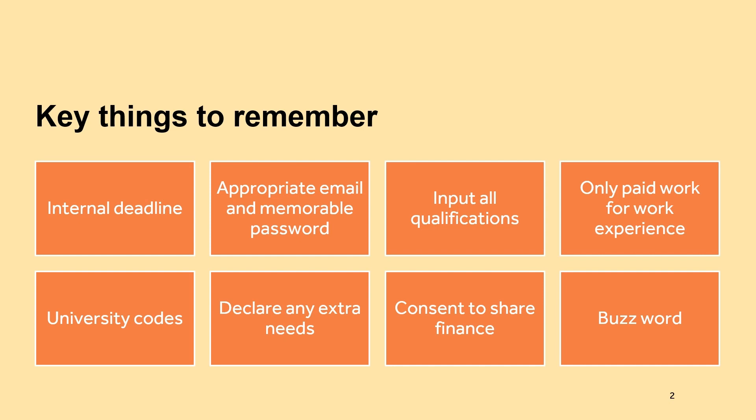In the qualifications section of your application you must input all of your qualifications, even if you weren't happy with your grades — you have to put your entire education history. In the work experience section, this is only for paid work experience. If you've done volunteering or a summer school, this can go in your supporting statement. When you apply, you have to put in a code that corresponds with the university and course you wish to study — make sure these codes are correct, as you can check them on UCAS. Don't make any typos; you want to make sure you've chosen the correct codes.